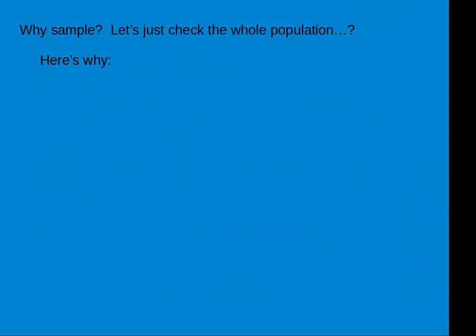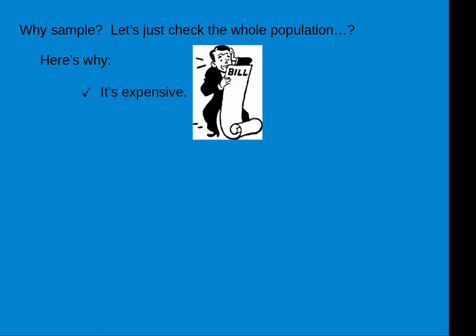So why should we sample? We could just check everyone in the population, or all the individuals in the population. Well, there are some reasons why we don't check the whole population. First, it's expensive. Imagine if you wanted to check all the people who lived in Bangkok — that's roughly 13 million people — and to have a staff go out and talk to 13 million people would take a lot of time and money.